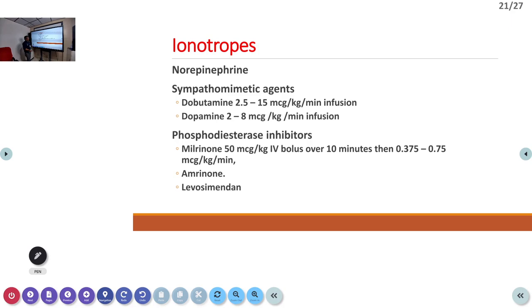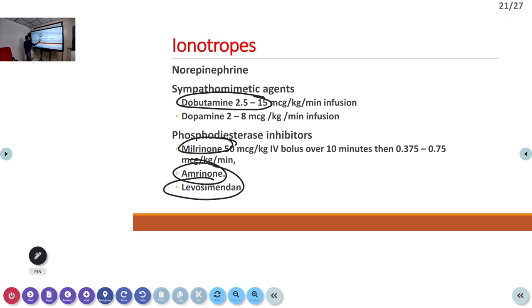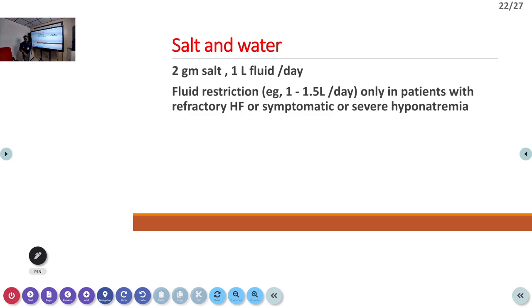If blood pressure is not improving, dobutamine is started — it improves ventricular contraction and is the most important inotropic drug in this setting. For ongoing cardiac failure management, salt and water are restricted: patients should take only one to two grams of salt per day (compared to up to eight grams in a normal South Indian diet) and approximately one liter of water per day.